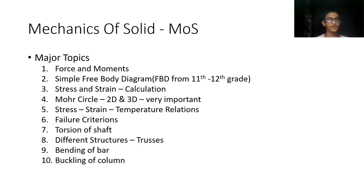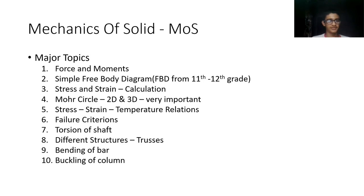Then we have torsion of shafts, and different structures such as trusses — structures you see in the Eiffel Tower or bridges where rods connect each other in a web-like structure. Trusses are very efficient at absorbing force with very little material. Then bending of bar and buckling of column are covered. It's important to understand the difference between shaft, bar, and column — the terminology differs based on what type of load is applied, though they may all look cylindrical.